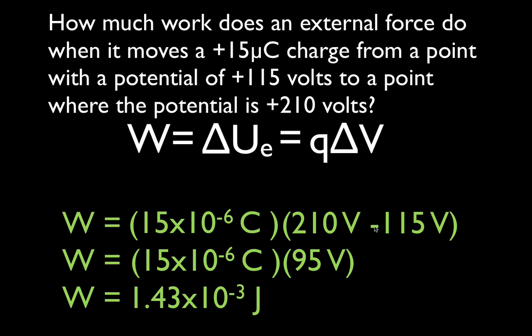That's pretty straightforward, but let's see what that means, because we could have negative work or positive work. In this case the answer is positive: 1.43 times 10 to the minus 3 joules. When we're working with positive charges — and by analogy with gravitational potential energy — positive work and positive changes in potential energy mean that you're moving something to a place that it does not want to be.